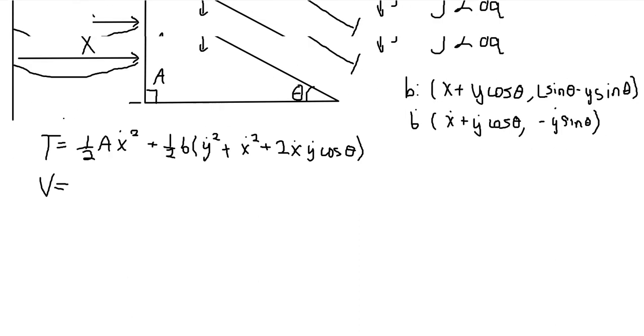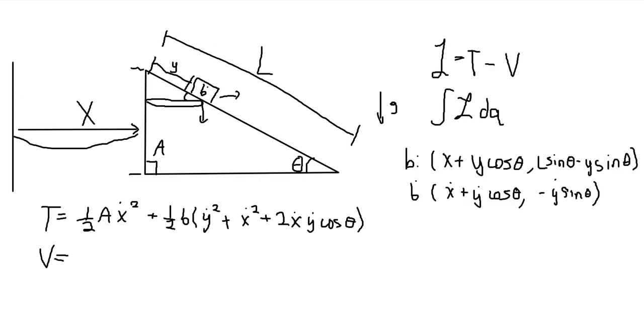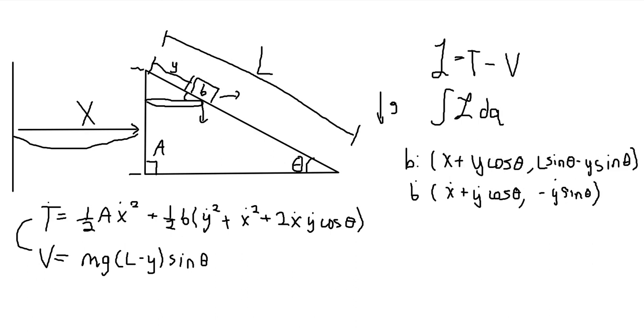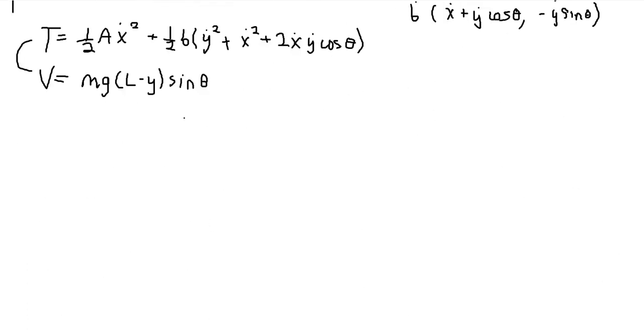So that is our kinetic energy. Our potential energy, well, that's pretty easy. It's just going to be M G H. And so that's just going to be M G times the Y here. So M G times L minus Y sine theta.